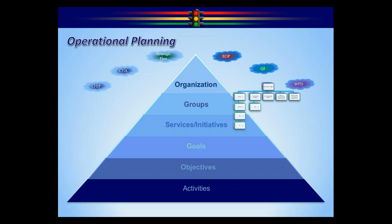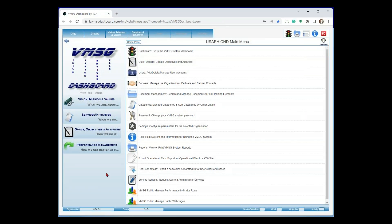What we're going to do now is go live into the system and walk through those three phases Andrew just described. We're going to develop a quick operational plan using the example of tobacco cessation, walk it through its life cycle using tools at the macro level and micro level, show you VMSG Public, and take it through the PDCA cycle to see how we might make quality improvements. We have this demo organization called USA Public Health. A lot of you have been in the system — you've had it for quite a while. When you log in, you'll see a screen similar to this, with menu items depending on your permissions.